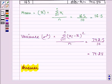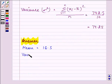the answer as mean is equal to 16.5 whereas variance is equal to 74.25. So this completes the session, hope you enjoyed it. Have a nice day, thank you.